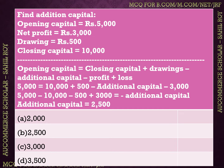The first question is a numerical or practical question. We have to find additional capital. Opening capital is Rs. 5,000, net profit is Rs. 3,000, drawings are Rs. 500, and closing capital is Rs. 10,000. Now we have to find the additional capital.